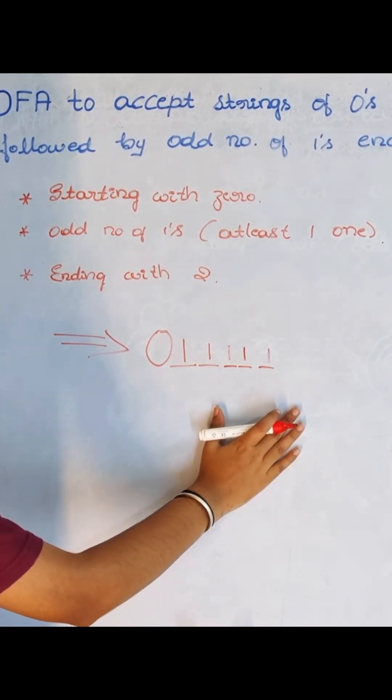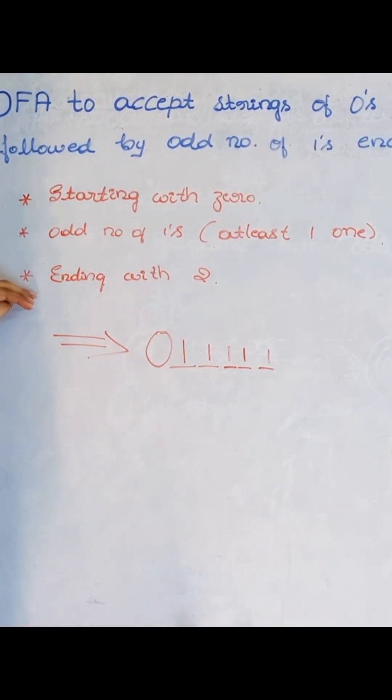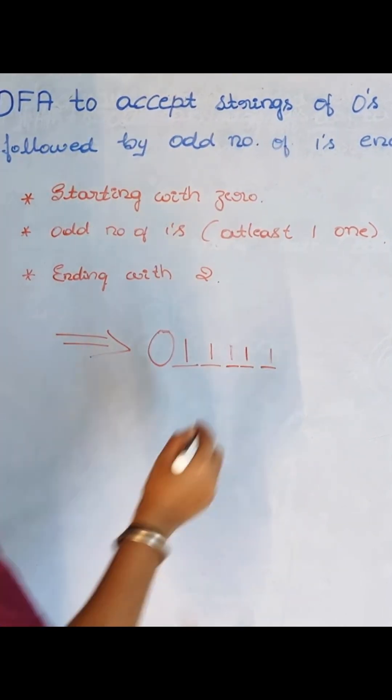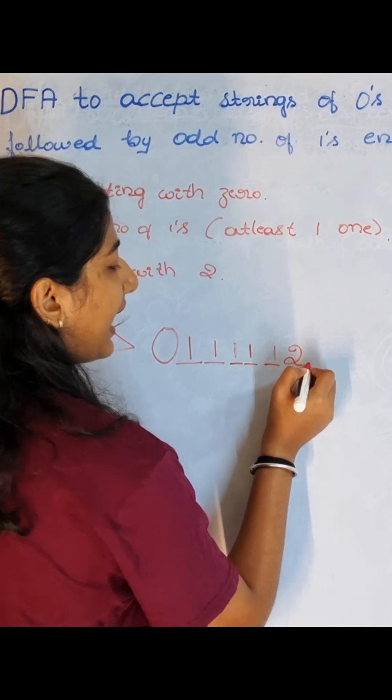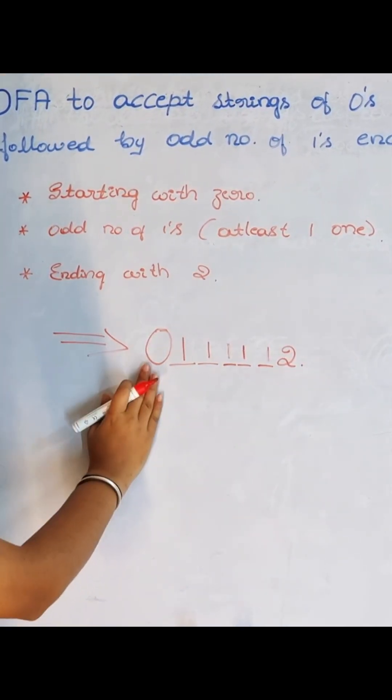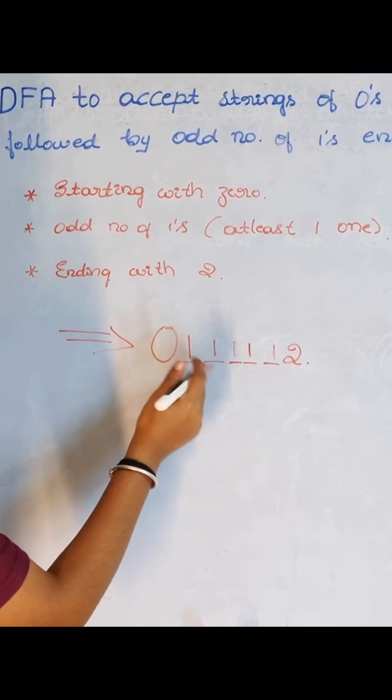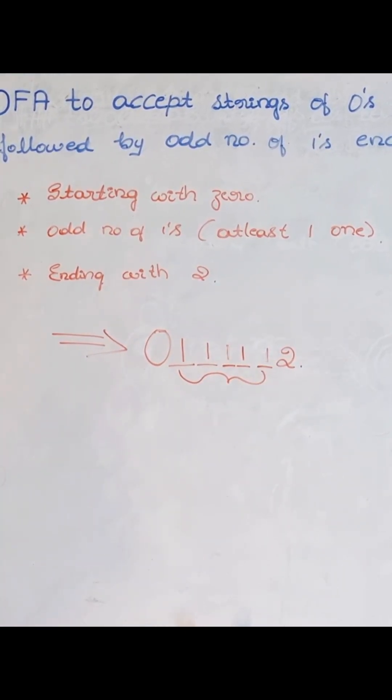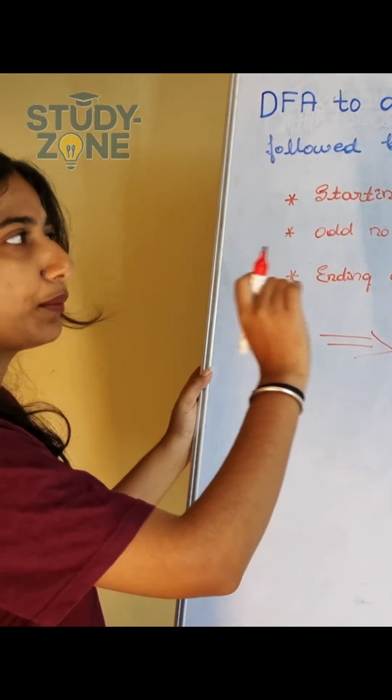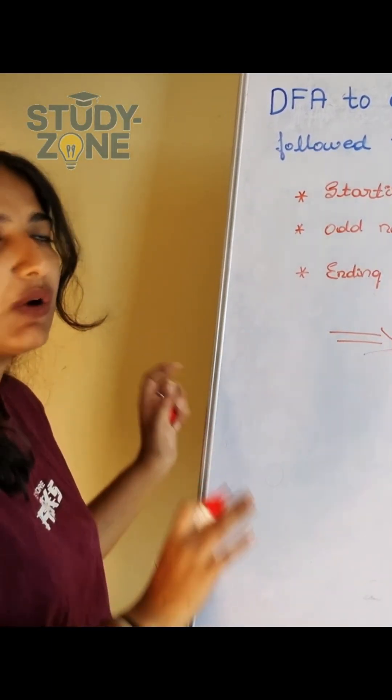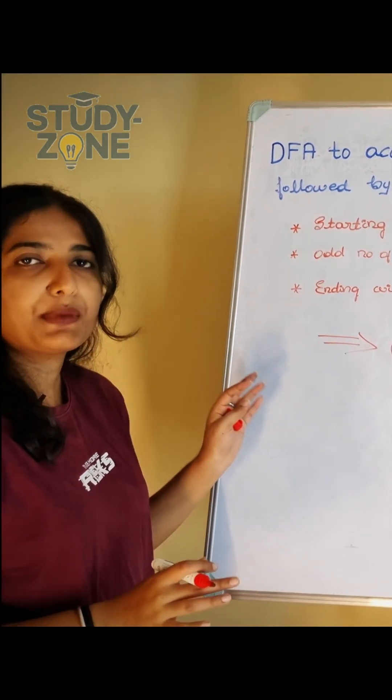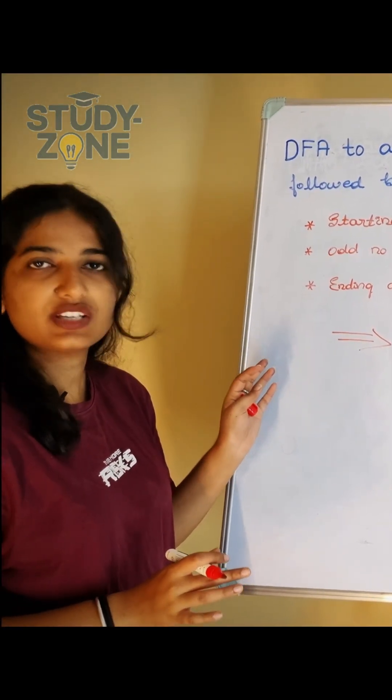We can have five 1s and ending with two. This means I can have it like this: zero will be starting, two will be ending, and in the middle we should have an odd number of ones only. This is how we should solve - by dividing all the terms that we have and then continuing to solve. Now let's begin by writing the transition diagram.